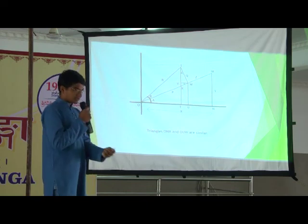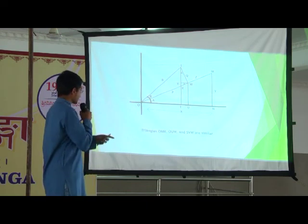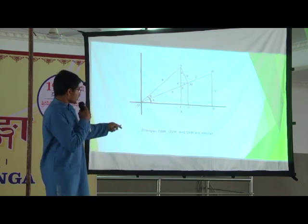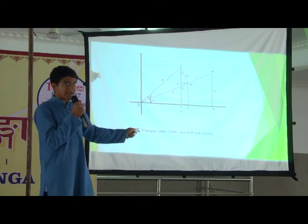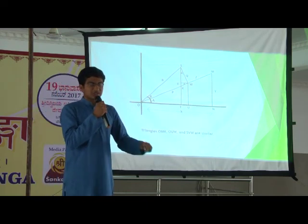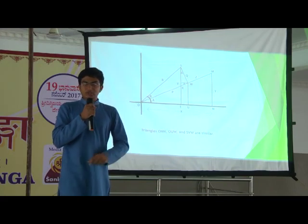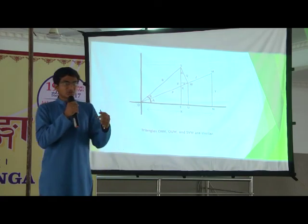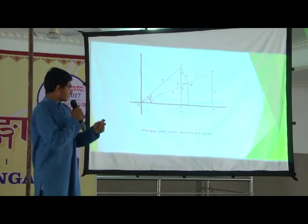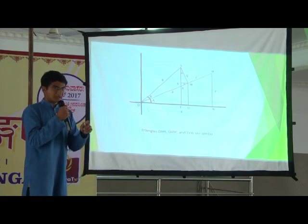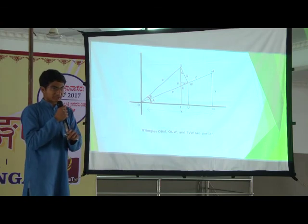So what we get is three triangles — O, N, M; O, U, W; and S, V, W — are all similar. Once we have similar triangles, we can use BPT, the Basic Proportionality Theorem.